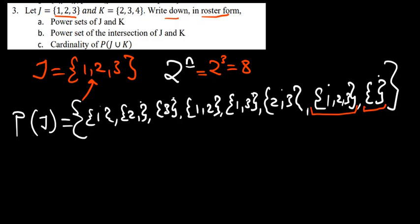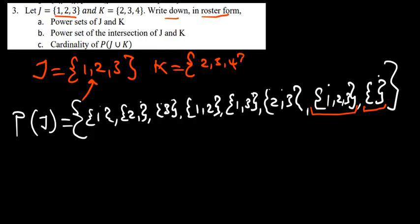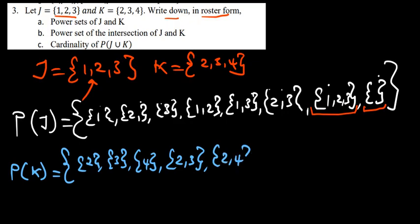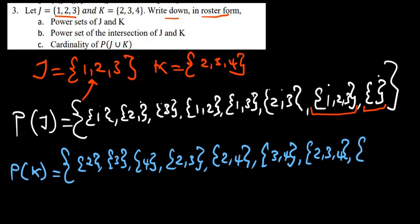That is the power set of set J. Now let's write down the power set of set K. Set K has {2, 3, 4}. So the power set of K equals: the 2 itself, the 3 itself, the 4 itself, then combining 2 and 3, combining 2 and 4, combining 3 and 4, then the whole set {2, 3, 4}, and then the empty set. So this is the power set of set K.